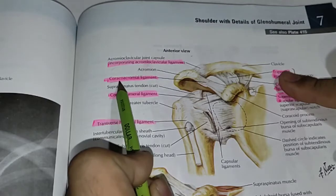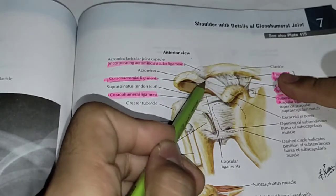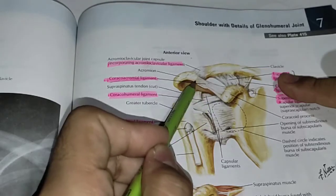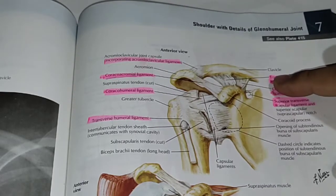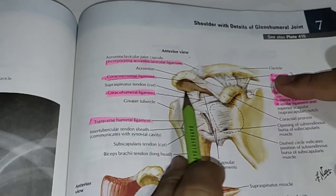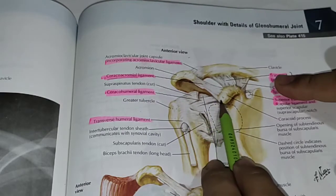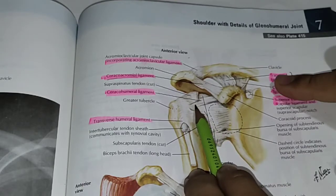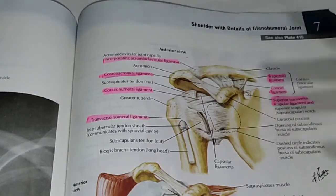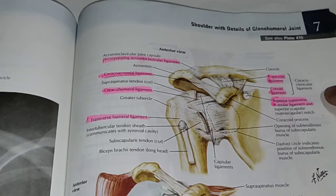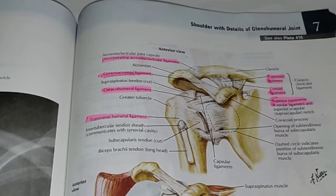The coracoacromial ligament extends from the coracoid process to the acromion process and supports the superior aspect of the shoulder joint, helping with shoulder joint stability. The coracohumeral ligament extends from the coracoid process to the lesser tuberosity of the humerus and helps support the anterior aspect of the shoulder joint, also contributing to shoulder joint stability.